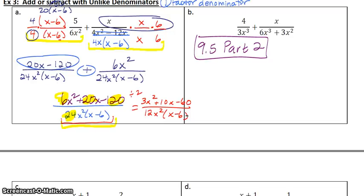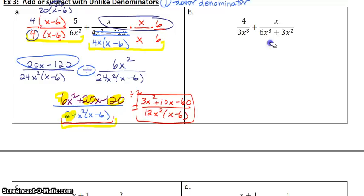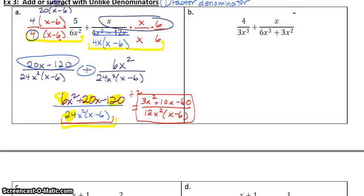Notice how everything in the parentheses stayed as it was. Let's look at example B. I'm trying to figure out what my least common denominator is. I've got to figure out what does this fraction have that the right one does not, and what does this fraction have that the left one does not. Please go ahead and factor the right fraction. A 3x squared can be pulled out with a leftover of 2x plus 1.